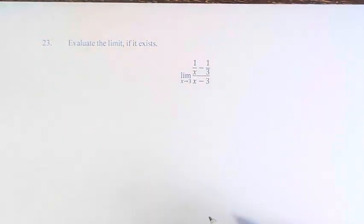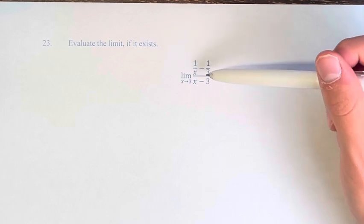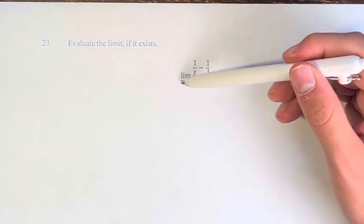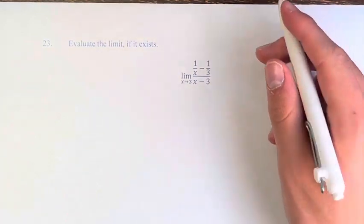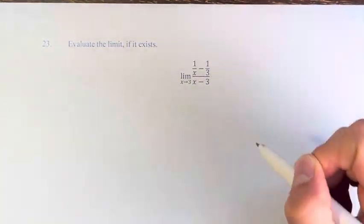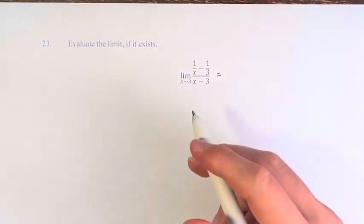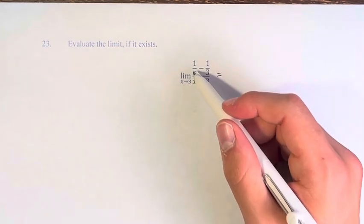So what we have to do here is to simplify this fraction in such a way that when we plug in 3, we're not just dividing by 0 on the bottom. So in order to do that, what we're going to do is we're going to combine these two fractions. So to do that, obviously, for subtraction of fractions, they need to have the same denominator.